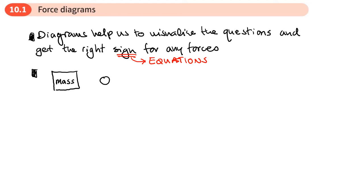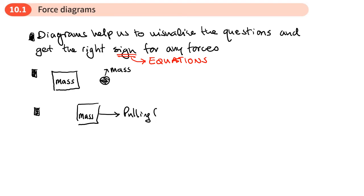Or it might be that we have a particle like this, and again we might write down what its mass is. It's often useful to represent the particle given in the question — it can be drawn as a rectangle or just a dot. Maybe a rectangle is a little bit easier to actually put the forces on. So let's say we've got some sort of mass and it's being pulled along by some sort of pulling force, and that force is going in that direction.